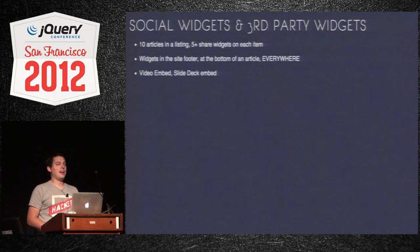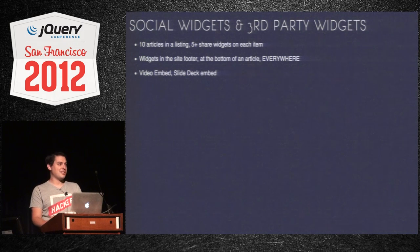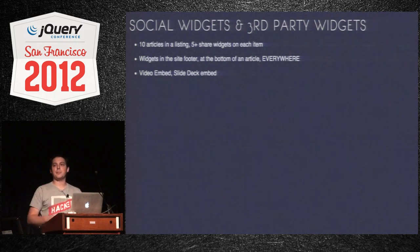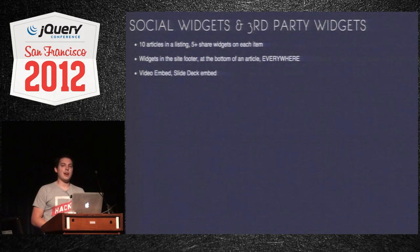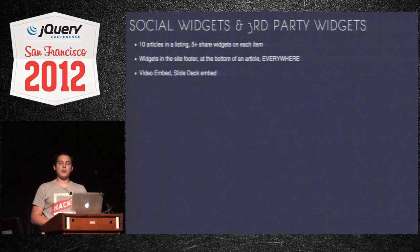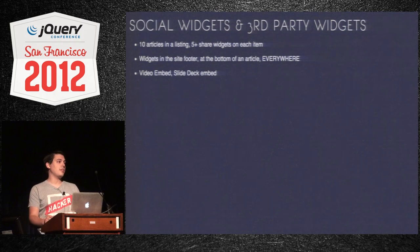Social widgets are like the worst kill for performance and trying to get things to load well — and even video widgets and other pieces that people put on your page that you don't have a ton of control over. Those things are highly inefficient at times. So if you have ten articles and five share widgets on each one and you take the concept of making everything ready all the time, you'll have all those widgets loading — a ton of bandwidth, DNS requests, and other things that will slow your page down.